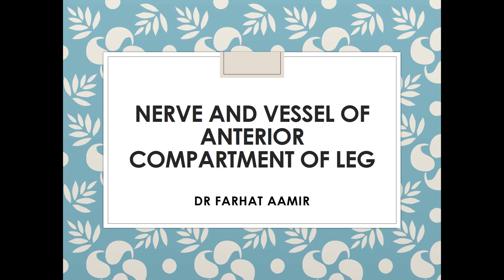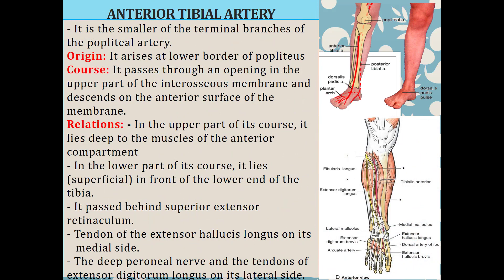Today we will discuss the nerve and the vessel of the anterior compartment of the leg. The vessel of the anterior compartment is the anterior tibial artery, which supplies the anterior compartment. It is the smaller of the terminal branches of the popliteal artery. The other branch is the posterior tibial artery. Remember: the popliteal artery divides into the anterior tibial artery (the smaller branch) and the posterior tibial artery.